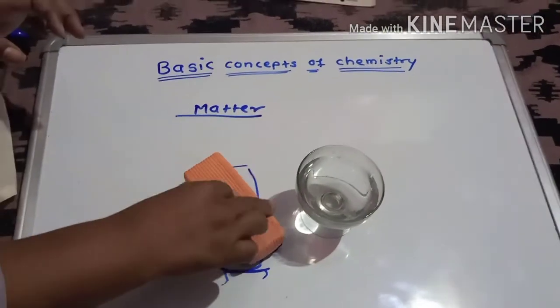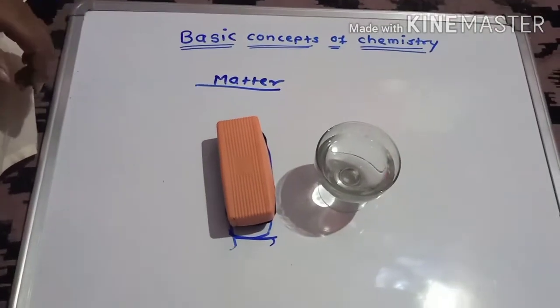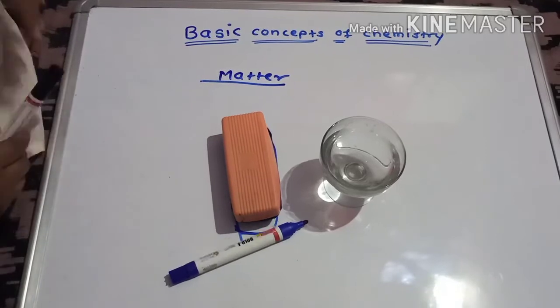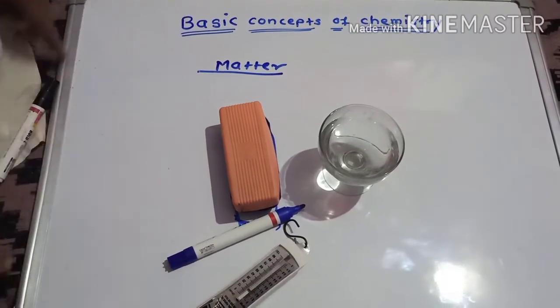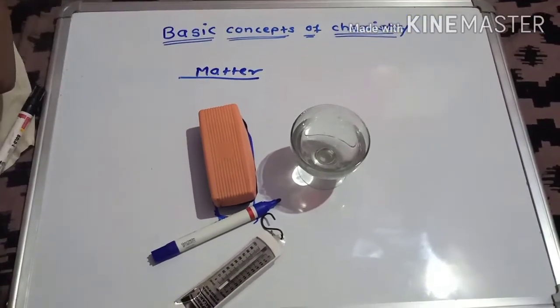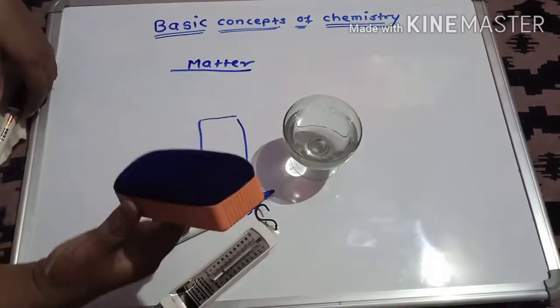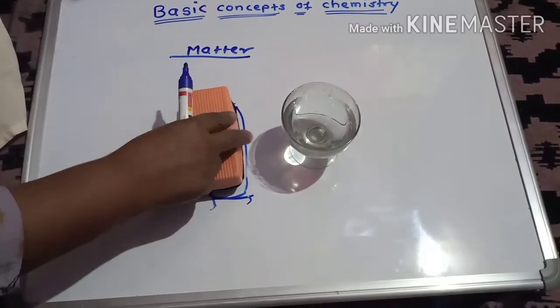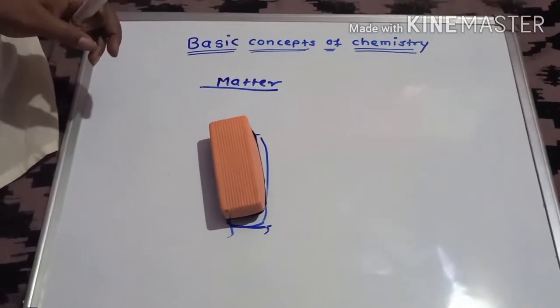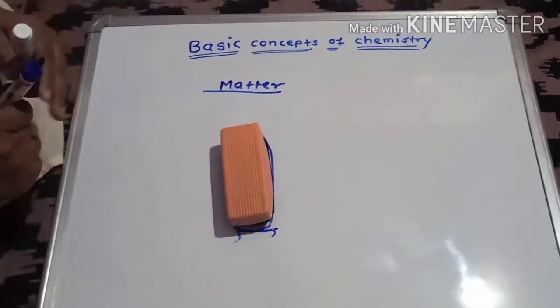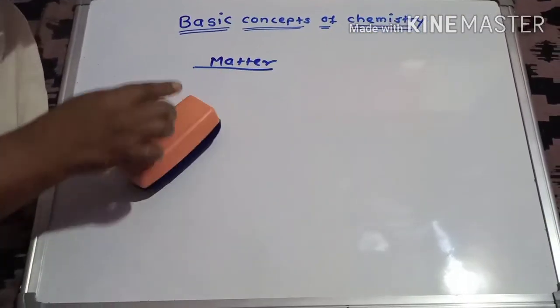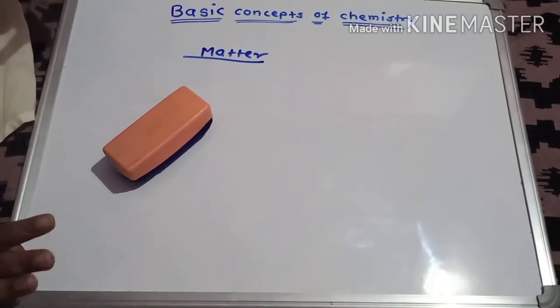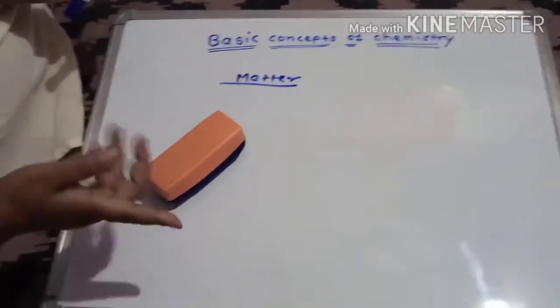So, this balloon is matter. Duster is matter, water is matter, air filled in a balloon is also matter. This pen is matter, the spring balance is also matter, this board is also matter, our body is also matter. Everything that has a mass and can occupy space is matter. On the basis of physical state, we can classify matter into three categories: solid, liquid, and gases.